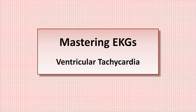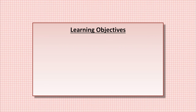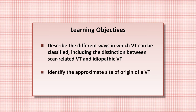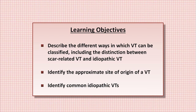Hello, everyone. This advanced EKG video is on the topic of ventricular tachycardia. It will assume that you're already a little familiar with the EKG characteristics of VT as a general category of arrhythmias, but by the end of the video, you'll be able to describe the different ways in which VT can be classified, including the distinction between scar-related and idiopathic VT, to identify the approximate site of origin of a VT, and to identify common idiopathic VTs. Today, I'll not be discussing specific features of the congenital arrhythmogenic syndromes. Of those, hypertrophic cardiomyopathy, Brugada syndrome, and arrhythmogenic right ventricular dysplasia are discussed in a separate video on sudden cardiac death, while long QT syndrome is discussed in a separate video on the QT interval.